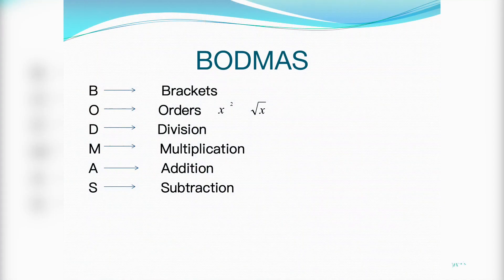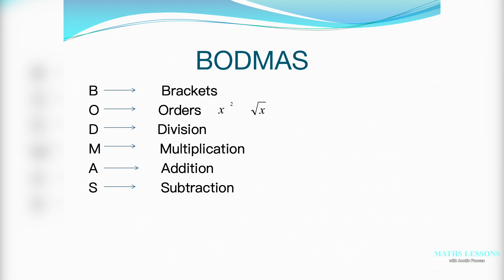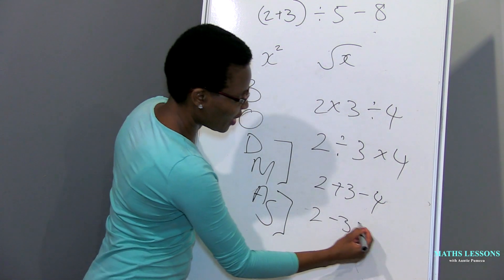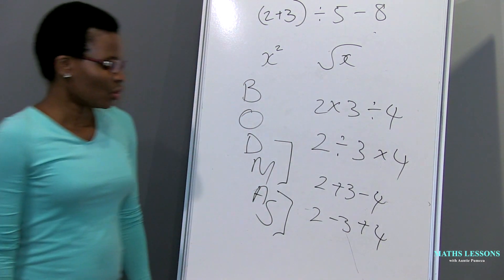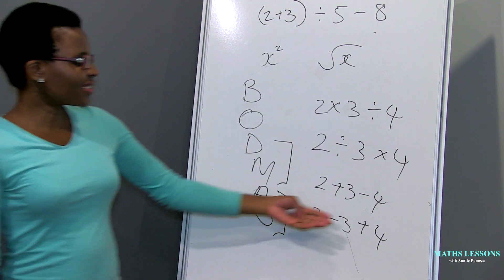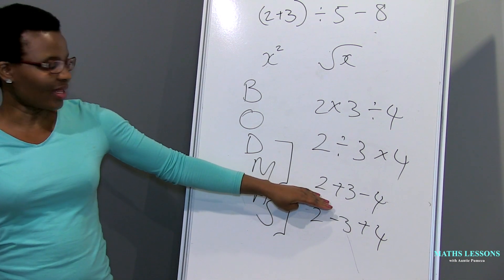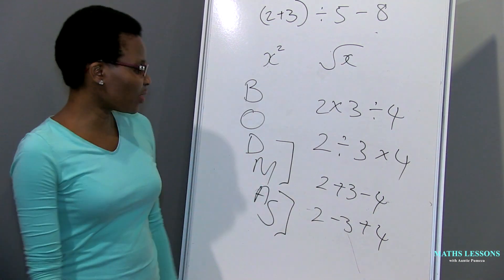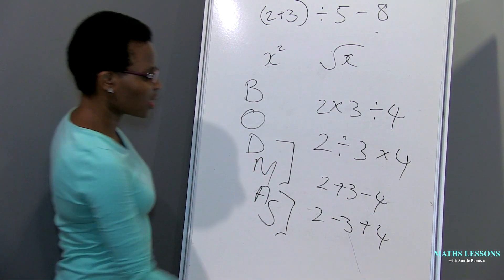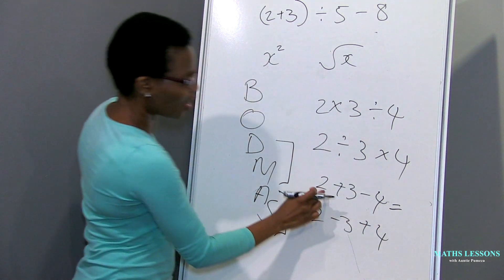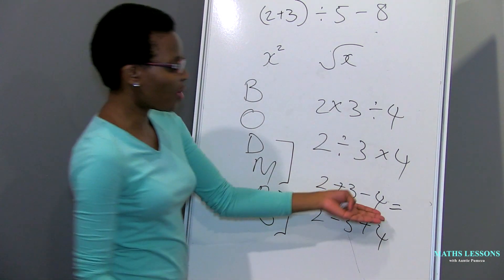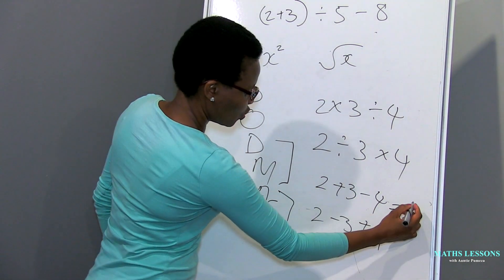Same with addition and subtraction — they are also in the same level. So when you have two plus three minus four, you start with the one on the left: two plus three is five, minus four is one. Always start with the one on the left.